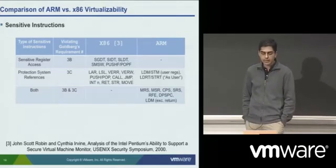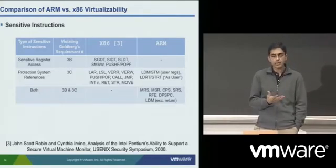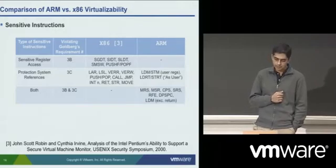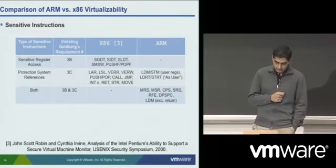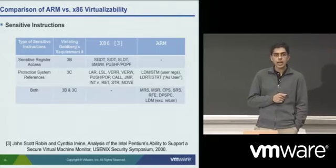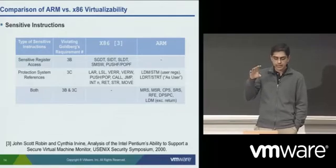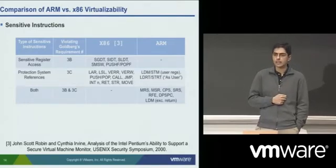To end today's talk, I thought it would be interesting to do a comparison of virtualizability properties for both the ARM and x86 architectures. Sometime in 2000, during the Usenix Security Symposium, Cynthia Irvine and John Scott Robin presented an analysis of the Intel x86 architecture, studying which x86 instructions violate which requirements of Popek and Goldberg's specification from 1973 or 1974.